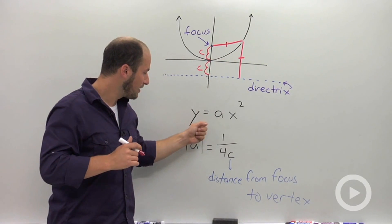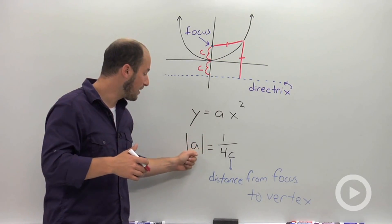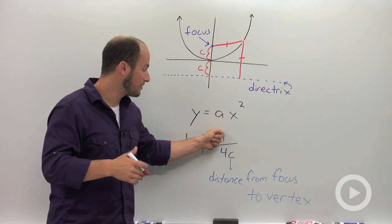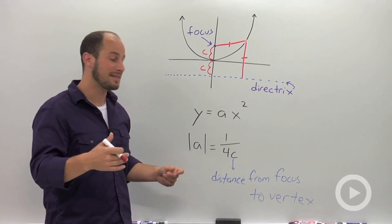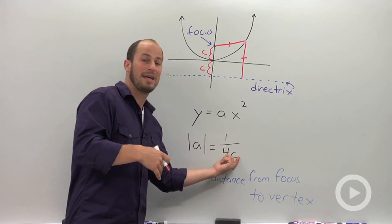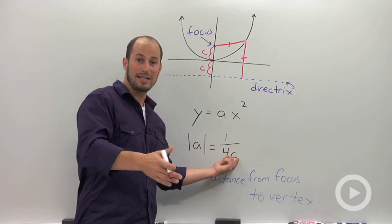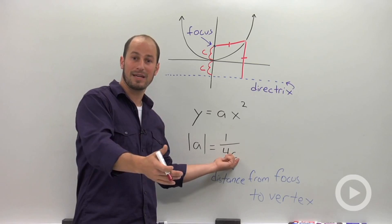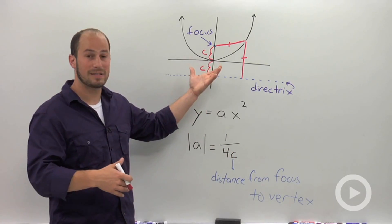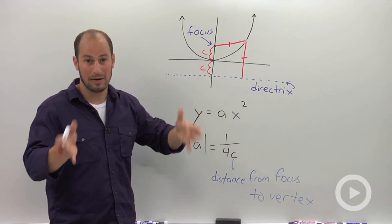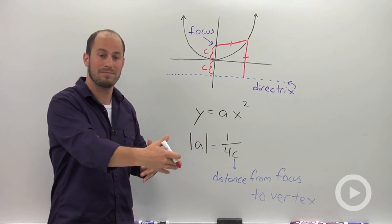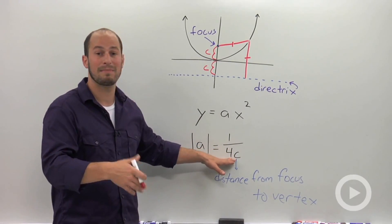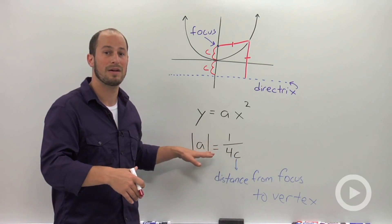And lastly, this a, this coefficient on x squared, can be defined by absolute value of a is equal to 1 over 4c. And the reason they have that absolute value is this is just going to dictate the magnitude of a. It doesn't actually tell us the sign. So upward-facing parabola, a is going to be positive. Downward-facing parabola, we know a has to be negative. So we can throw those signs in afterwards, but this is going to tell us the magnitude, at least the numeric value of that coefficient.